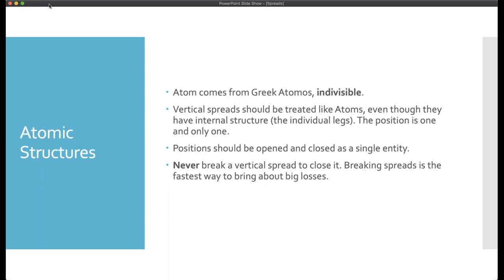This brings me to the concept of atomic structures. The word 'atom' comes from the Greek 'atomos,' meaning indivisible — something you cannot divide. That's how I look at every spread in the Gamma Optimizer room. A vertical spread is like an atom. From the outside it looks like a single entity; even though we know it contains individual legs, from the outside it's a single thing. I open and close vertical spreads as a single entity. I never break a spread. Never.